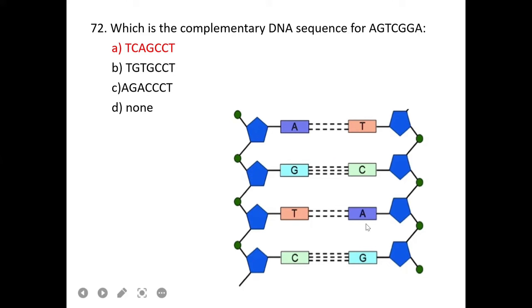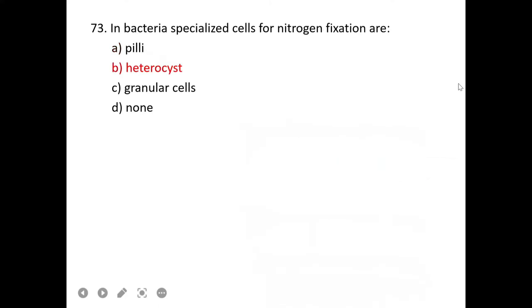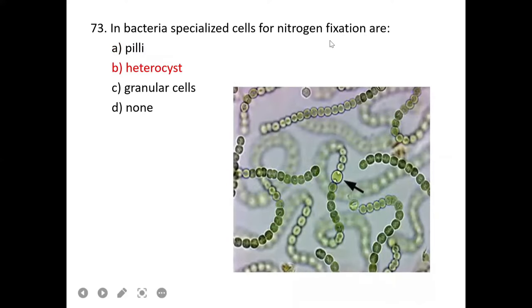In bacteria, specialized cells for nitrogen fixation are heterocysts. B is the correct option. Excretory system of platyhelminthes is protonephridia, which are flame cells.